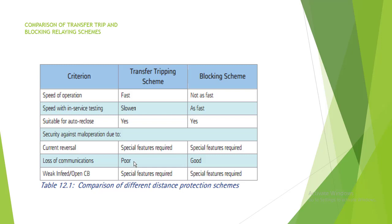Loss of communication: in the transfer tripping scheme, if communication is lost, performance is very poor — it cannot work. In the blocking scheme, if communication is lost, it can still work — performance is good.